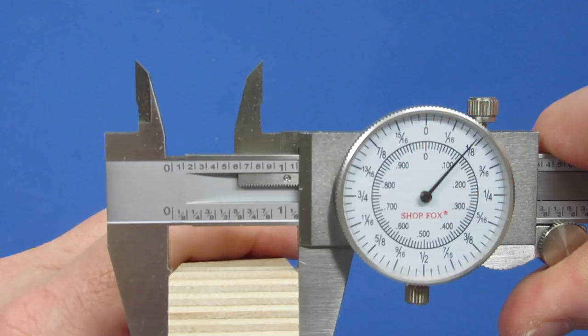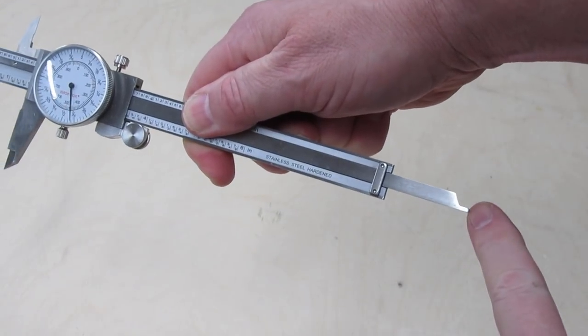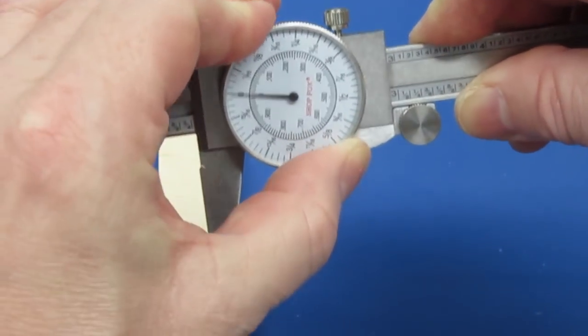It has the same features as the digital one, with outside jaws, inside jaws, depth bar, and a locking screw. To zero the dial, unscrew the bezel locking screw and turn the bezel to zero.